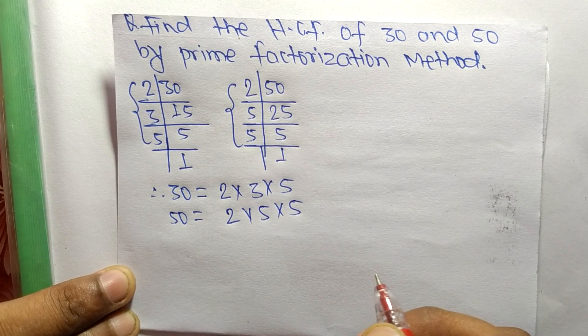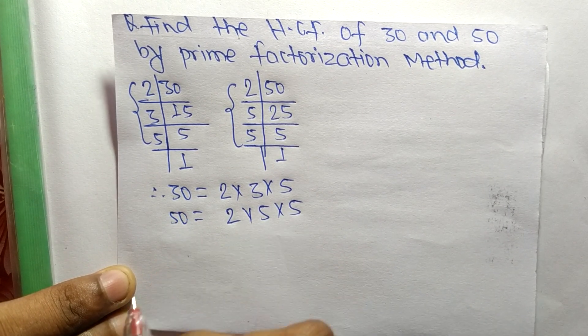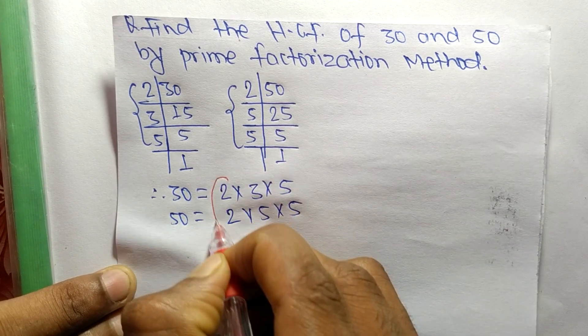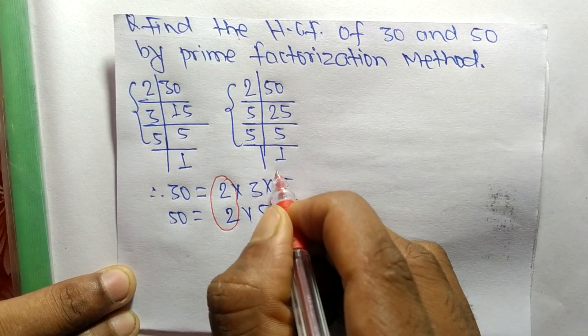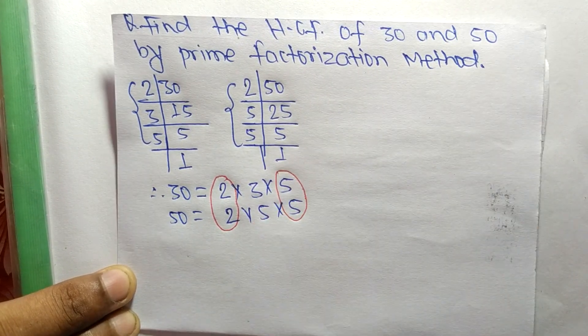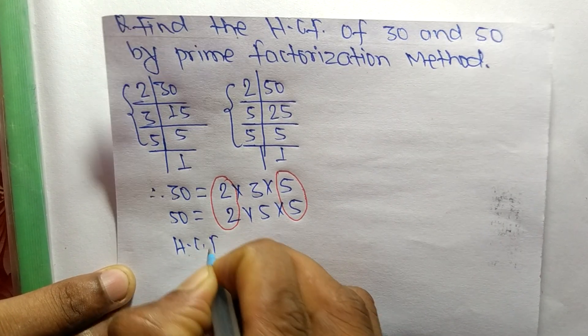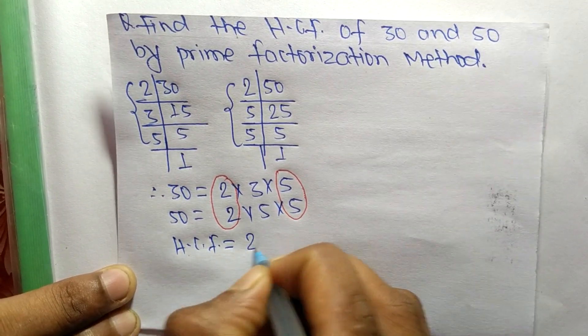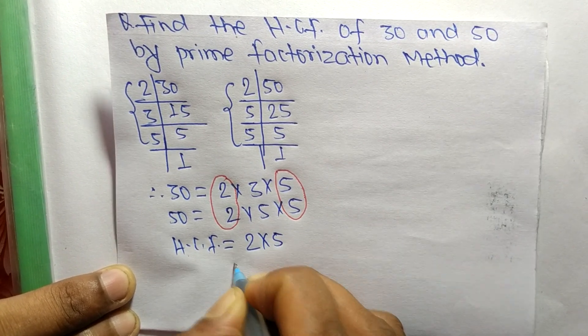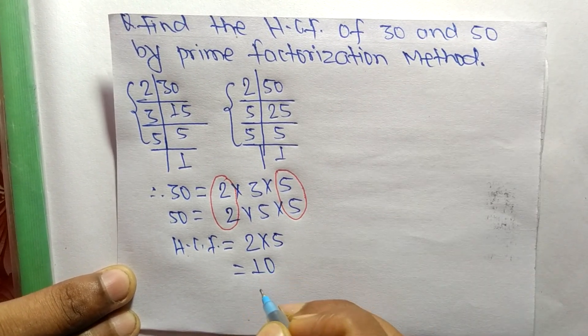So the first common factor here is 2 and the second one is 5. So HCF is equal to 2 times 5, which is equal to 10.